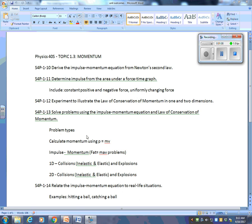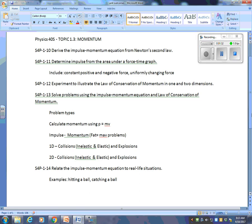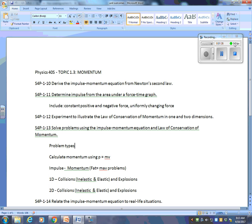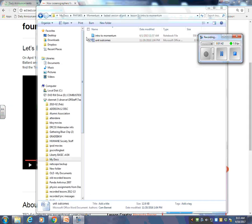These are the problem types that you're going to encounter: Calculating momentum using P equals M times V. Super easy. Impulse momentum, Fat Mav problems. That will make more sense to you in a bit. 1D collisions, which are both inelastic and elastic, and 1D explosions. So things that go and things that go boom. And 2D collisions and explosions. And relate the impulse momentum equation to real life situations, hitting a ball or catching a ball. So there's a good mix of theory and problem solving.